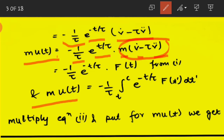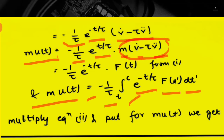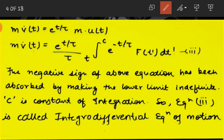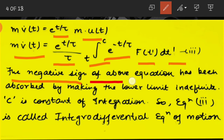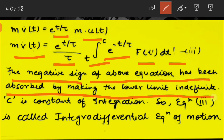Integrating with the given limits, the equation becomes m·u(t) = −(1/τ) · ∫_t^∞ e^(−t′/τ) · F(t′) dt′. Multiplying equation two by m and substituting for m·u(t), we get equation three: m·v̇(t) = (e^(t/τ)/τ) · ∫_t^∞ e^(−t′/τ) · F(t′) dt′, where the negative sign has been absorbed by making the lower limit of the integral t. Here c is the constant of integration, and this equation three is called the integro-differential equation of motion.